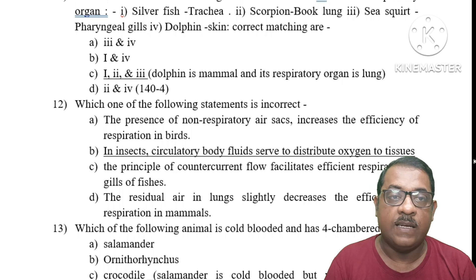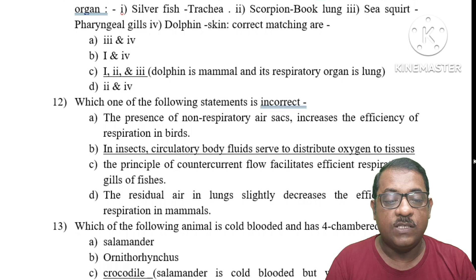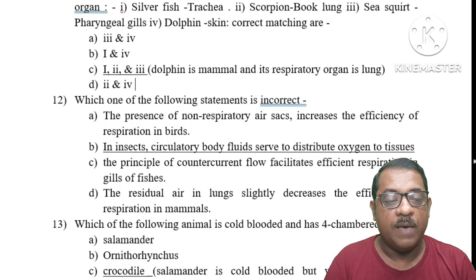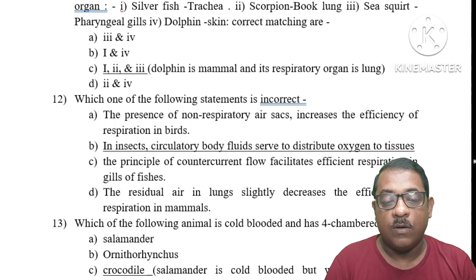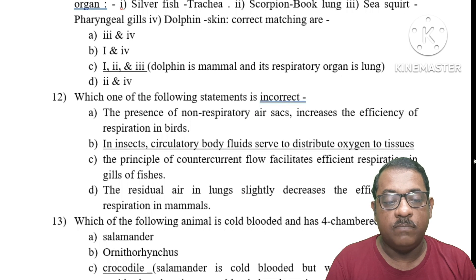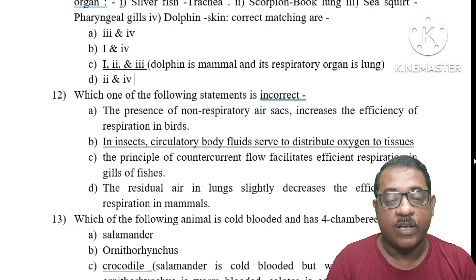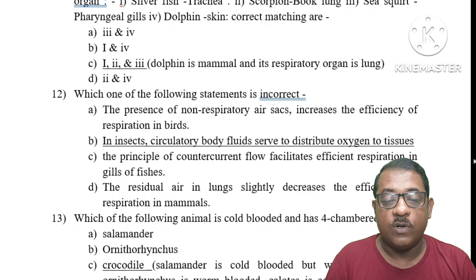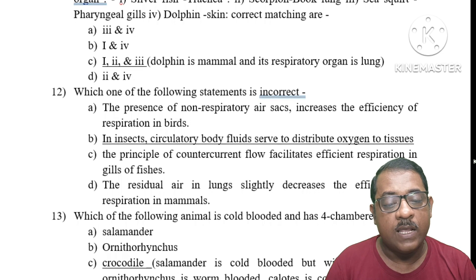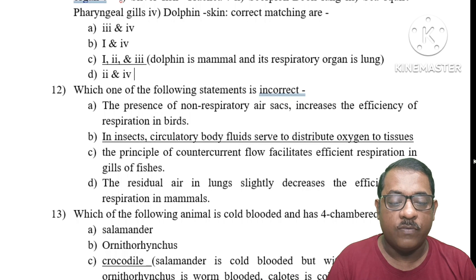Question 12: Which statement is incorrect? Option A: The presence of non-respiratory air sacs increases the efficiency of respiration in birds. Option B: In insects, circulatory body fluids serve to distribute oxygen to tissues — this is the incorrect statement, making it the right option. Option C: Counter current flow facilitates efficient respiration in gills of fishes. Option D: Residual air in lungs slightly decreases efficiency of respiration in mammals. Only Option B is incorrect.